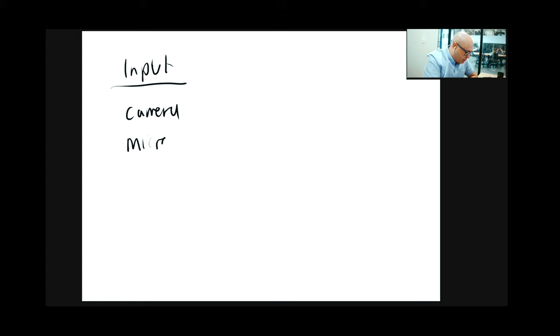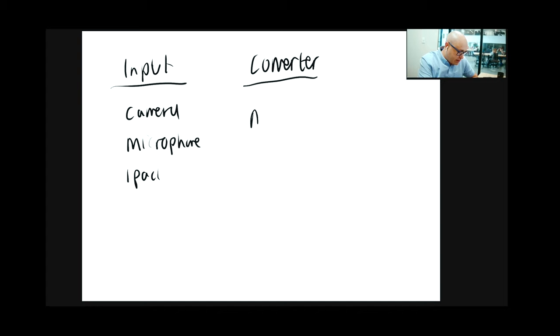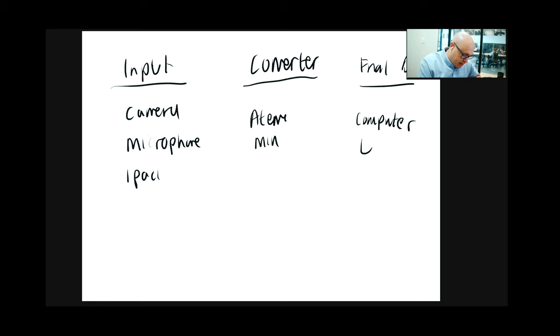You're going to have three main parts. First, the input: a camera, a microphone, and an iPad. Second, a converter called an ATEM Mini, which makes it really easy to convert all of this information into a form that goes onto the computer. And third, the final destination: a computer and LinkedIn Live and any other platforms. Those are the three components to this system.